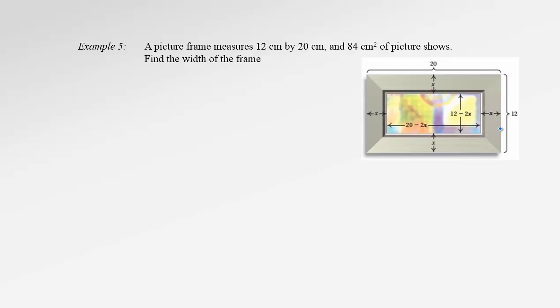A picture frame measures 12 by 20 centimeters. So, on the diagram we have width 12 and the length 20 centimeters. And 84 centimeter square of picture shows. That means the area of the picture itself without the frame is 84 centimeters square. Find the width of the frame.